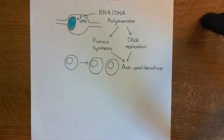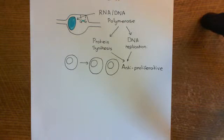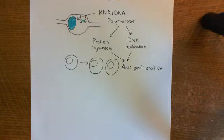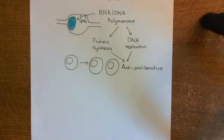Welcome to this next video in which we are discussing the adaptive immune system and immunosuppressants. We're now going to look at two drugs which are going to stop proliferation of B cells and T cells and hence stop the adaptive immune system.